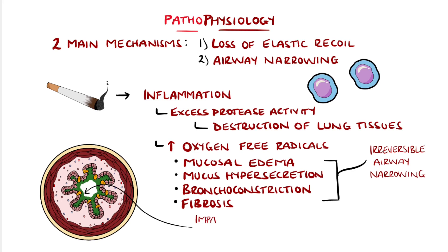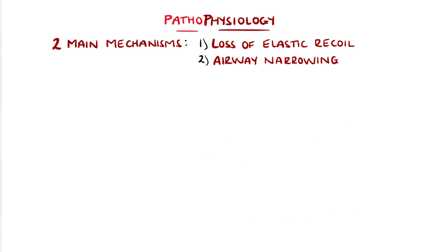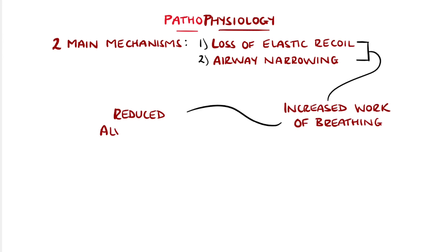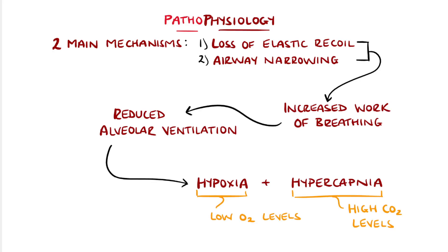Patients with COPD have impaired mucociliary clearance, and so are more prone to having infections, and recurring infections increases the inflammation and so contributes to the disease progression. Together, these two mechanisms mean an increase in the work of breathing, which gives reduced ventilation of the alveoli. This leads to hypoxia and hypercapnia, meaning low levels of oxygen and high levels of carbon dioxide, respectively.